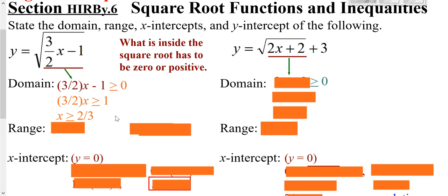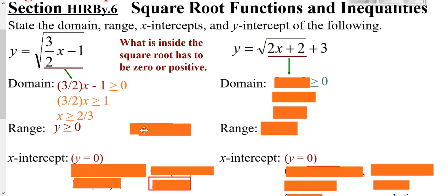Your range is what you get out. Here, there's no plus or minus in front of your root, so we know we're getting out positive values — we're not getting out negatives. If you're not getting out negatives, that means your range is greater than or equal to zero.